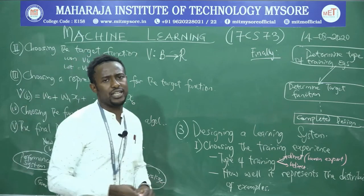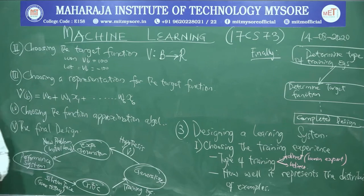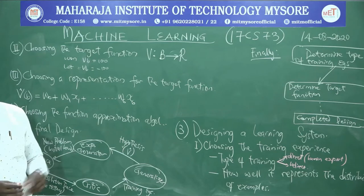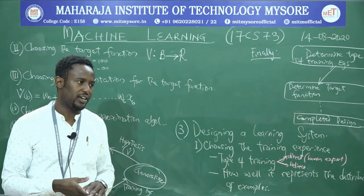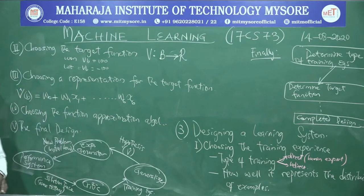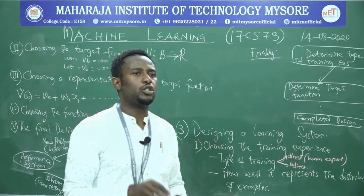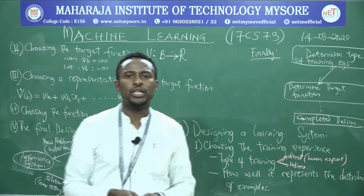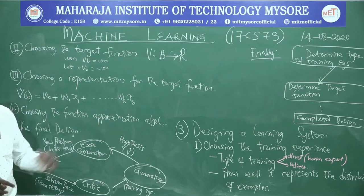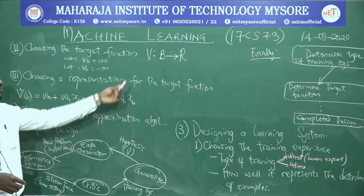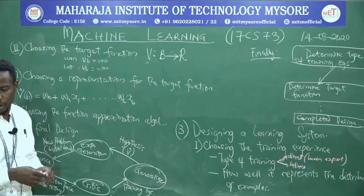The second step is choosing the target function. Let the target function be a set of hypotheses V. We define a function called 'choose_move' — the kind of move you perform when playing checkers, which is a board game where you move pieces in specific directions to defeat the opponent. We want to map the hypothesis: V is a function that maps all legal board states B to some set of real numbers.